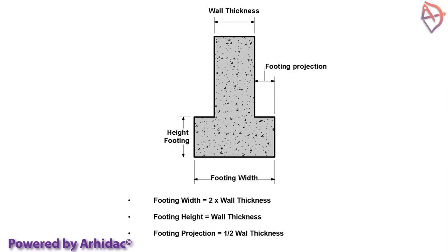The dimensions of the foundation walls and footings are normally provided in section views of the foundation plan. For normal soil conditions, the dimensions of a T-shaped footing can be determined if the wall thickness is known. The footing width will be two times the wall thickness, the footing height will be the same as wall thickness, and the footing projection will be half of the wall thickness.